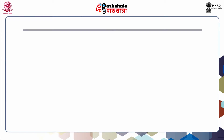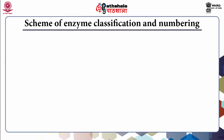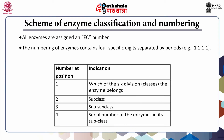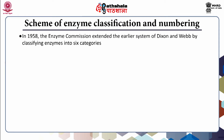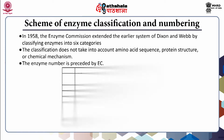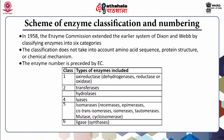All enzymes are assigned an EC number. The numbering of enzymes contains four specific digits separated by periods, and the enzyme number is preceded by 'EC'. In 1958, the enzyme commission extended the earlier system of Dixon and Webb by classifying enzymes into six categories. The classification does not take into account amino acid sequences, protein structure, or chemical mechanism. These different types of enzymes are given in the table.